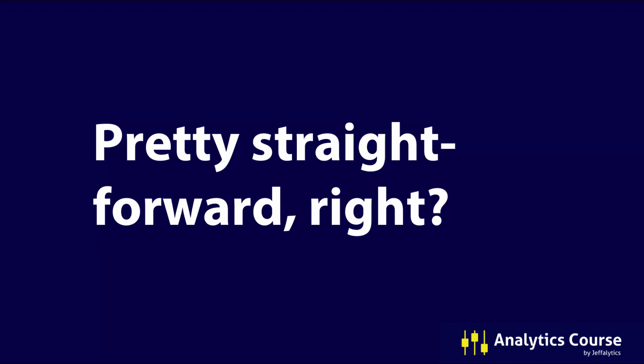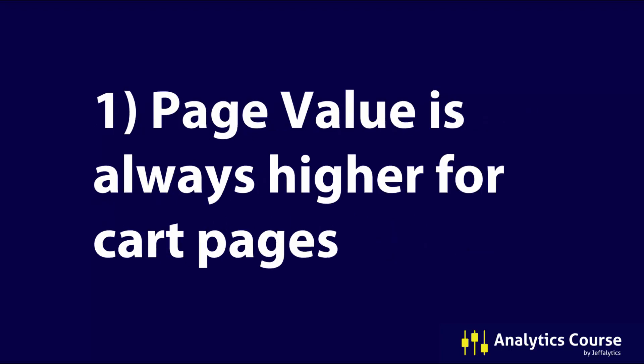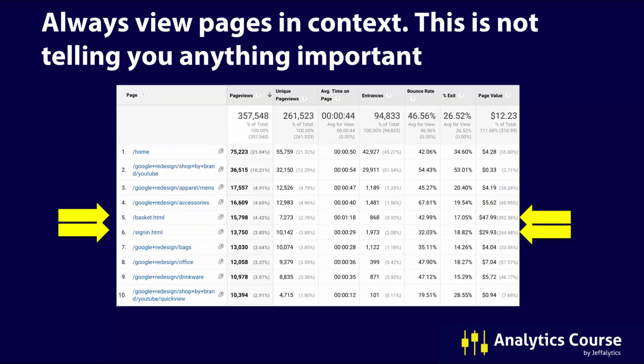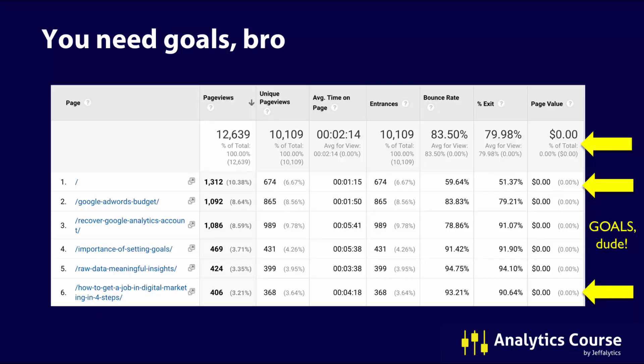Here are some observations about page value. Number one: page value is always higher for cart pages. Going back to the Google Store, you can see the basket and sign-in pages have a much higher page value than anything else — obviously if someone is in their shopping basket or checking out, the percentage chance they'll complete the purchase is much higher. Number two: if your page value is zero across the board, you need goals set up. Here's a Keyword Hero view of Google Analytics — they didn't set up goals, which means page value can't be established for those important landing pages.